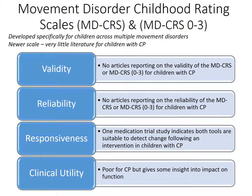The Movement Disorder Childhood Rating Scales were developed specifically for use with children. They describe the clinical features of different movement disorders, evaluate the intensity of movement disorders in different body regions at rest and on activity, and assess the influence of movement disorder on motor function and selected activities of daily living. There was no validity or reliability data available to assess these tools, and limited evidence of their responsiveness to change for children with CP.